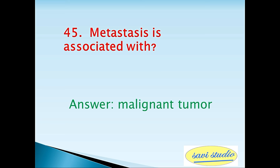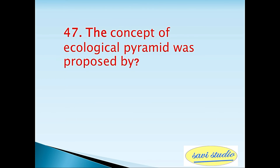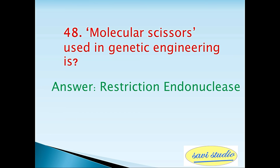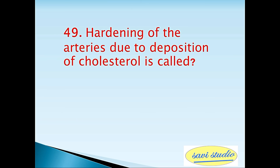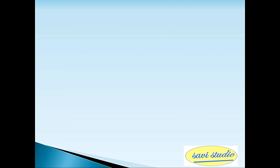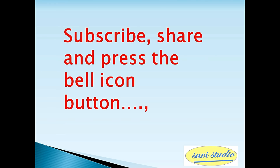Forty-fourth question: Balbiani rings are structural features of — answer: polytene chromosomes. Forty-fifth question: Metastasis is associated with — answer: malignant tumor. Forty-sixth question: Which is the largest gland in the human body? Answer: liver. Forty-seventh question: The concept of ecological pyramid was proposed by — answer: Odum. Forty-eighth question: Molecular scissors used in genetic engineering are — answer: restriction endonucleases.